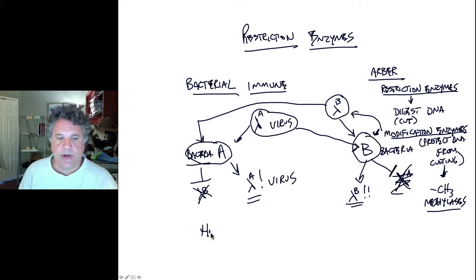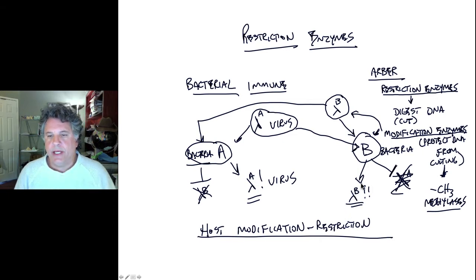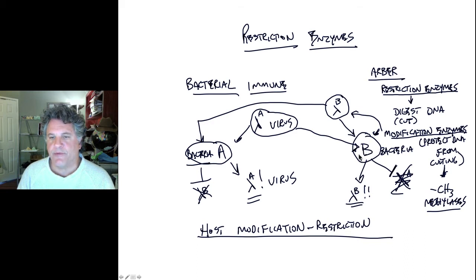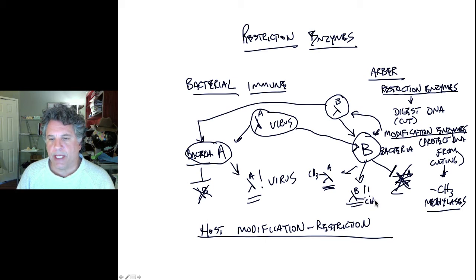These systems are known as host modification — that is, methylation restriction systems — and they govern the ability of bacteria to digest foreign DNA but not their own DNA. Viruses can adapt to the restriction modification system of a particular strain because if any viruses make it through an initial infection and produce progeny, their DNA would be methylated in the same way as the host strain, allowing those modified bacteriophage to infect that bacterial strain thereafter.